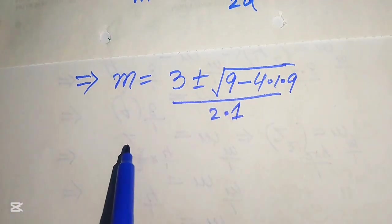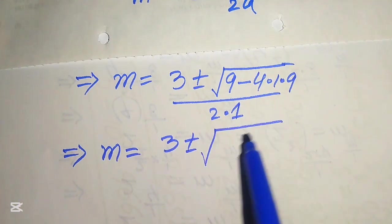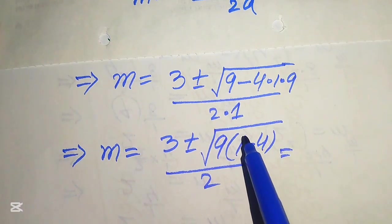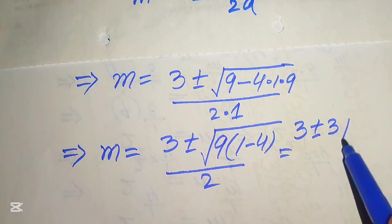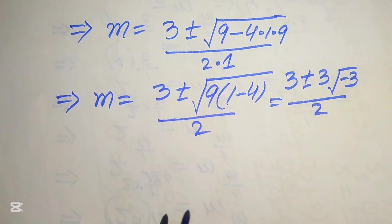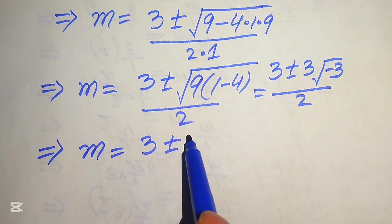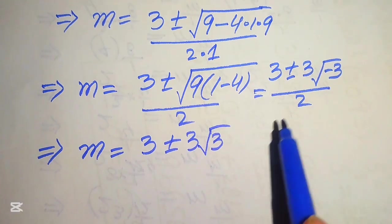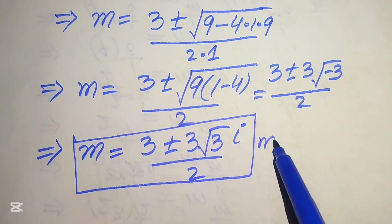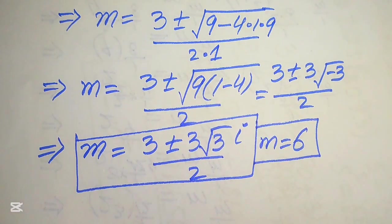Taking common factor 9 from inside the square root: m = [3 ± √(9(1 − 4))] / 2 = [3 ± √(9 × −3)] / 2. Since √9 = 3, we get m = [3 ± 3√(−3)] / 2 = [3 ± 3√3 · i] / 2, where √(−1) = i. These are two complex roots from Equation 1, and together with m = 6 we have three roots from Equation 1.